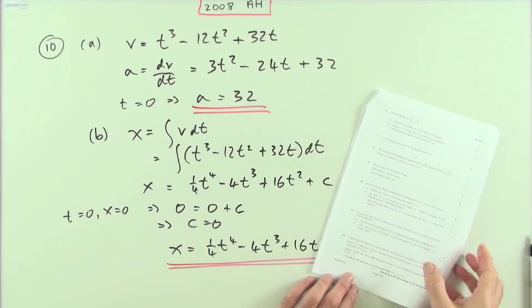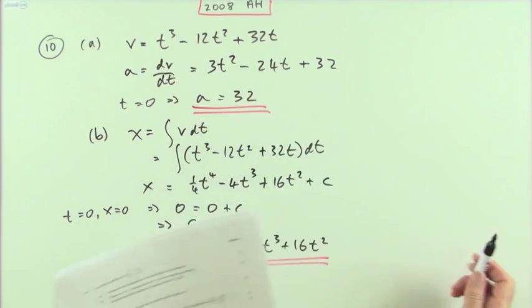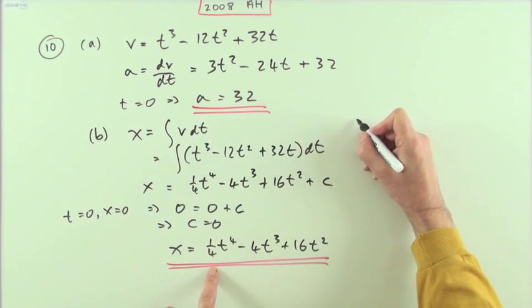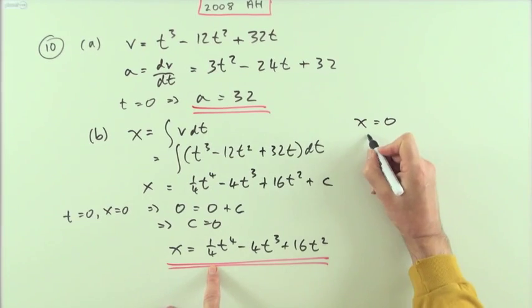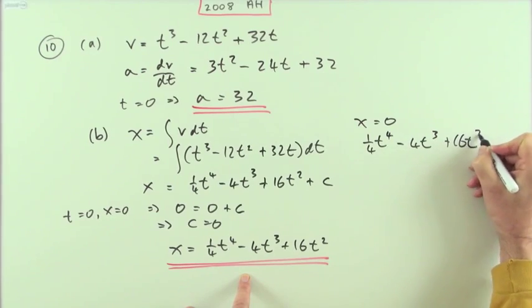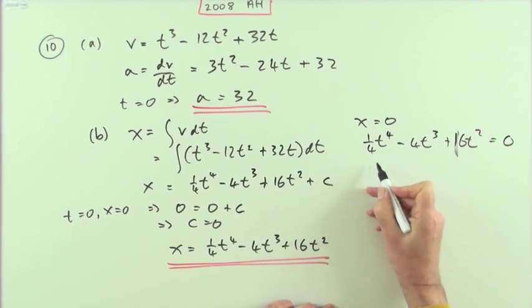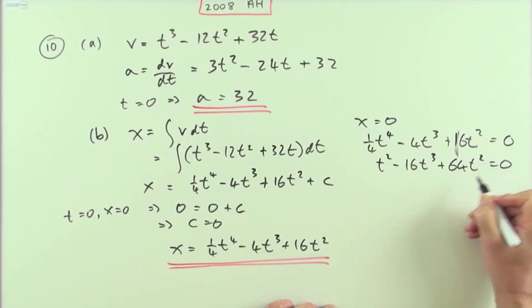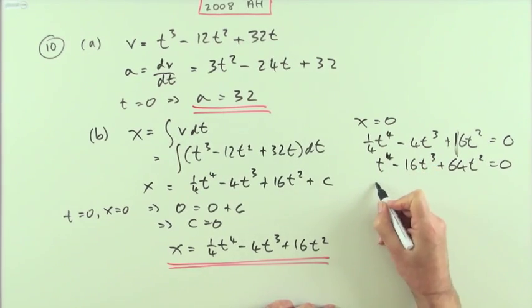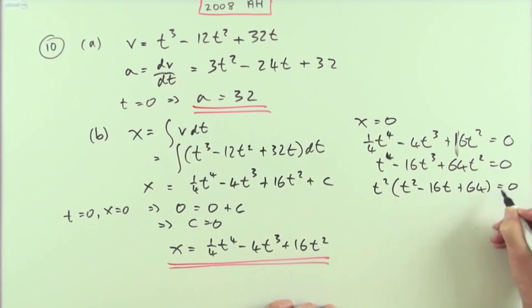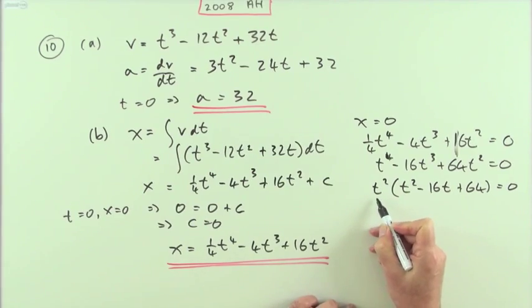The next part: show the body returns to the origin at some time T and find when that happens. It was at the origin at time equals zero, so we're looking for x equals zero again — what other value of t gives zero? Multiplying through by four and taking out t squared, that leaves t squared minus 16t plus 64 equals zero.